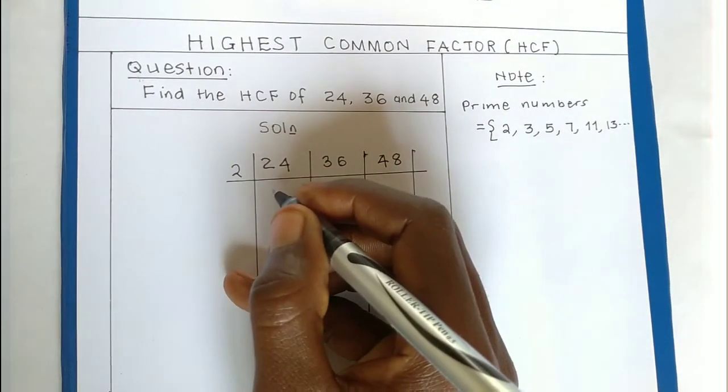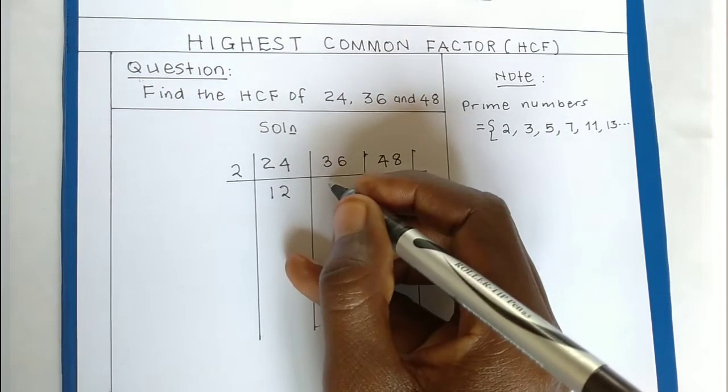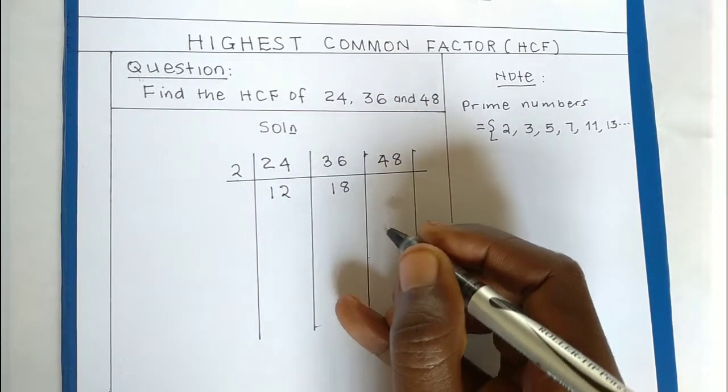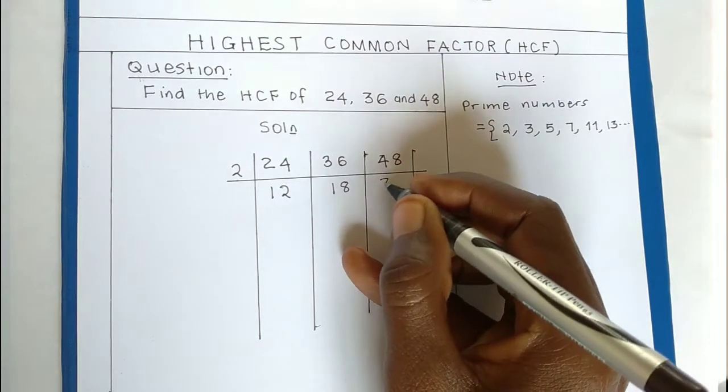24 by 2 you get 12, 36 by 2 you get 18, and 48 by 2 you get 24.